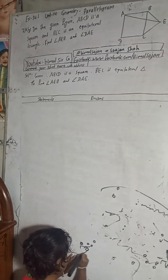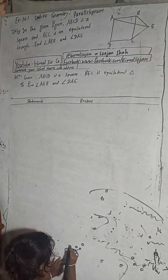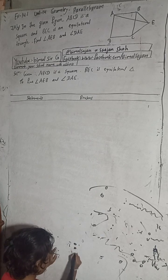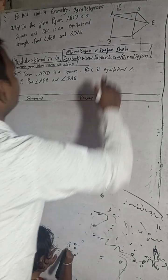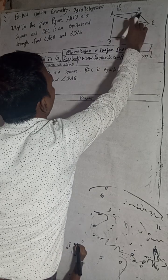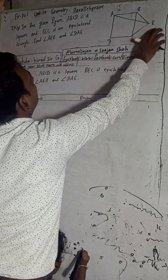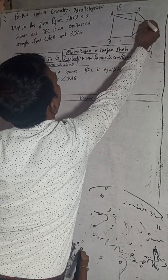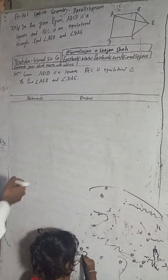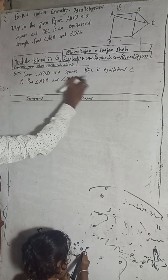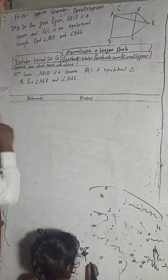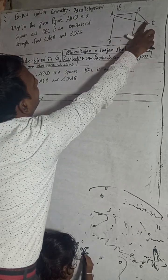Now I will solve this problem. If you find this video useful, don't forget to share, like, and comment. The question is 7b: in the given figure, ABCD is a square and BCE is an equilateral triangle. We need to find angle AEB.